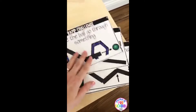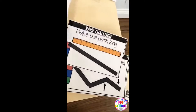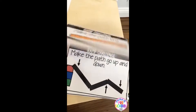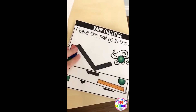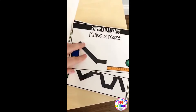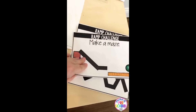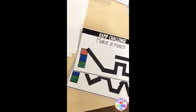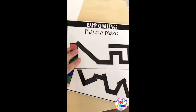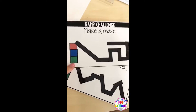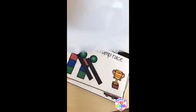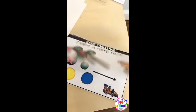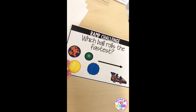Other challenges include: make the ramps connect, make the ball go through something, make the path long, make the path go up and down — that one's tricky — make the ball go in the air, make a maze, make a roller coaster, make a ramp race, and which ball rolls the fastest, which explores friction.